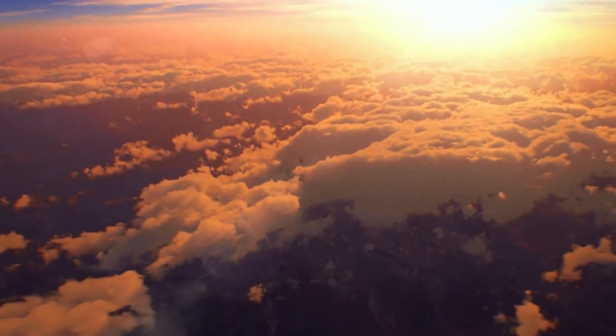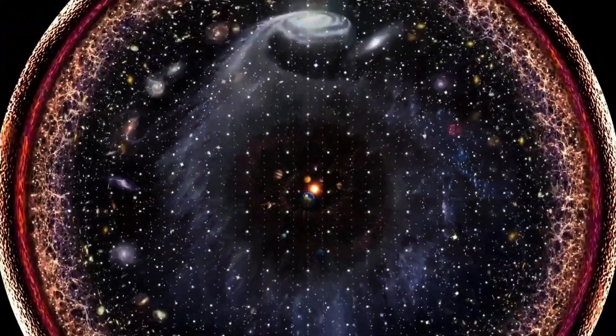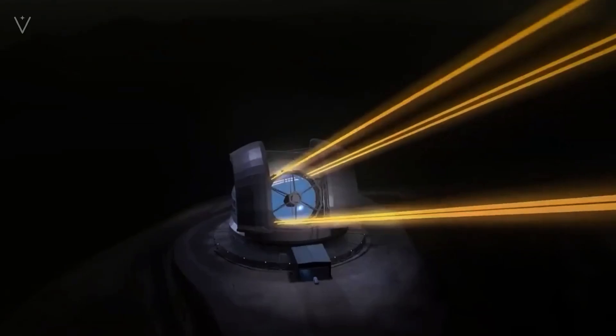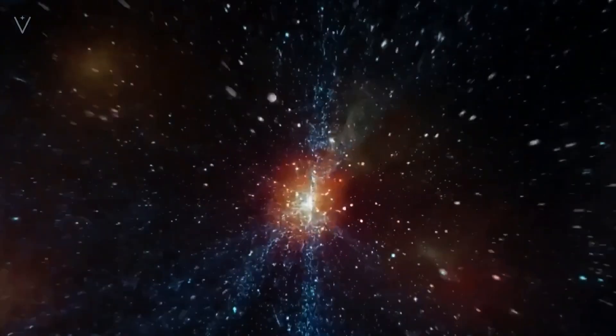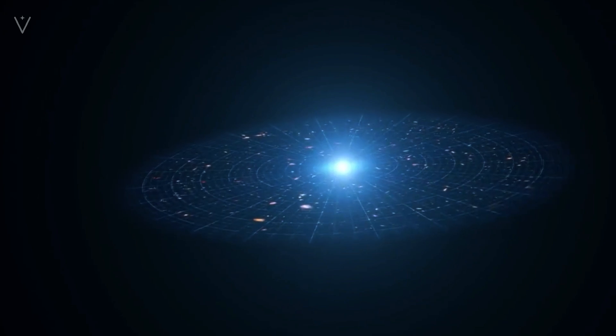Have you ever thought about this question? Why has the universe, which has a history of 13.8 billion years, reached an observable range of 93 billion light-years? Theoretically, due to the limitation of the speed of light, no matter how advanced the instruments we use, we can only observe the universe within 13.8 billion light-years from us.